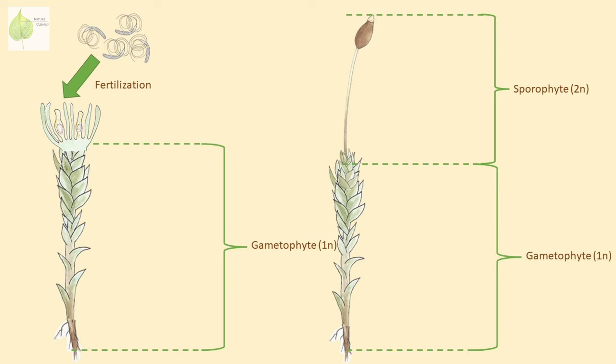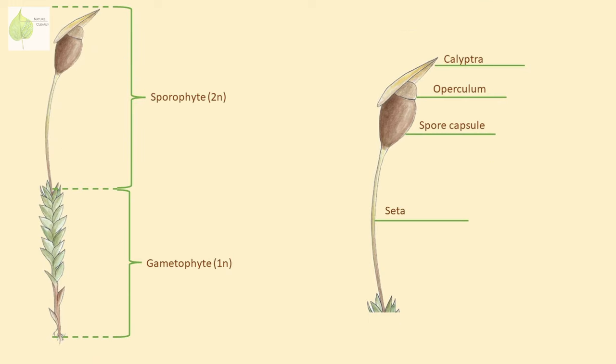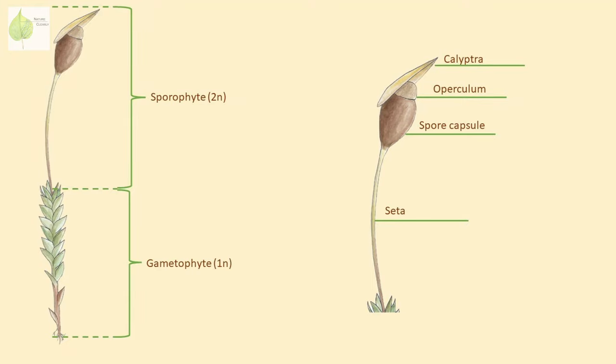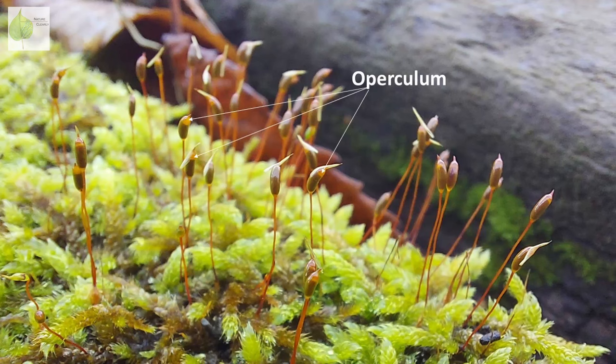The sporophyte part of the moss stays attached to the gametophyte, so we get a moss plant in which the bottom portion is a gametophyte and the top a sporophyte. The sporophyte consists of a seta, which looks like a stem with a bulge on the top — that bulge is a spore capsule. However, in some species the seta might be missing. The spore capsule is often covered by a detachable calyptra, a sort of hat or beak that provides the maturing capsule protection from dehydration. The capsule is also covered by an operculum, which functions as a lid and is often easily visible as a differently colored tip of the capsule.